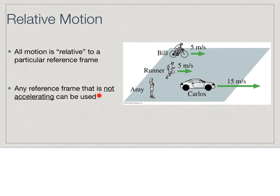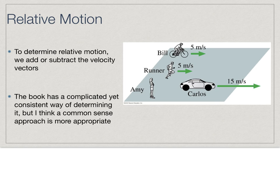Any reference frame that is not accelerating can be used. For the most part we won't come across this as an issue, but when we talk about centripetal motion it will be important. So it's not accelerating, meaning it's not speeding up or slowing down, or it's not changing direction. Those are two key things.